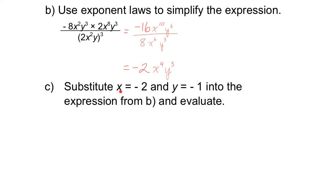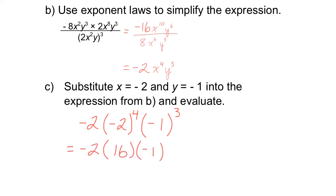Now we substitute x equals negative 2 and y equals negative 1 into the simplified expression and evaluate it — substituting values in for x and y, doing the exponents, then the multiplication. We get the same answer as before. So it doesn't matter if you substitute and then evaluate, or simplify first, then substitute and evaluate — you get the same value either way.